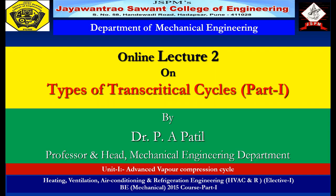Greetings and welcome to online lecture 2 on unit 1, that is advanced rapid compression cycle. Today's lecture we are going to discuss the types of transcritical cycles. There are six types of transcritical cycles. In this lecture we will discuss three of them. In the previous lecture we discussed the basic transcritical cycle, its construction, working, and also the drawback. The main drawback is heavy expansion losses, and to overcome these, the cycle needs modifications. There are six modifications suggested by different researchers. Today we will discuss three of them and in the next lecture we will discuss the remaining three.